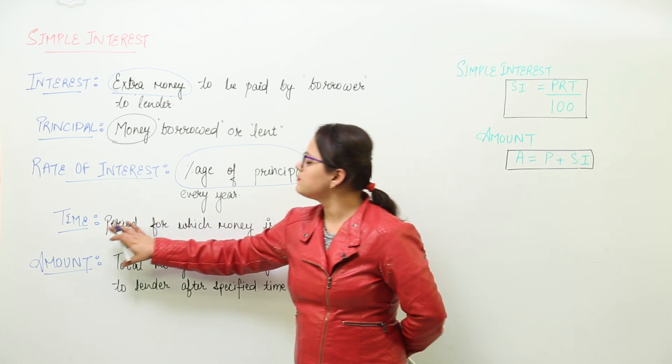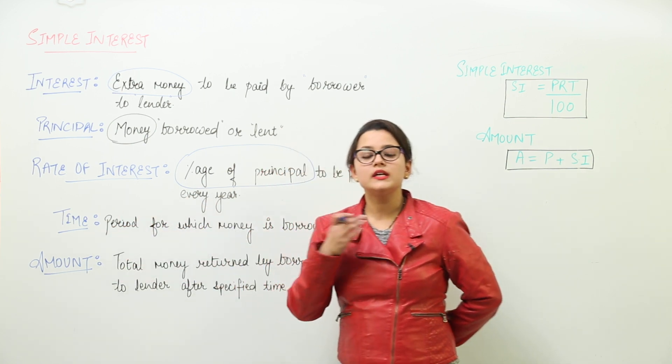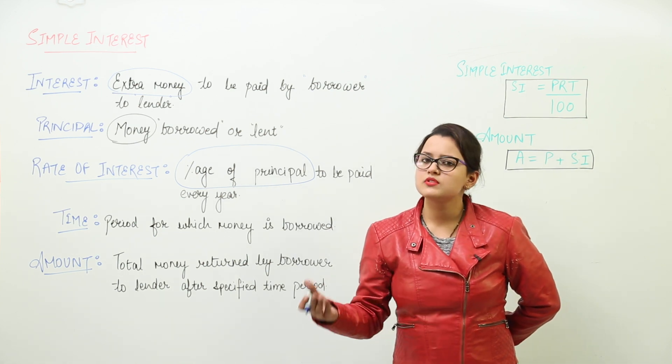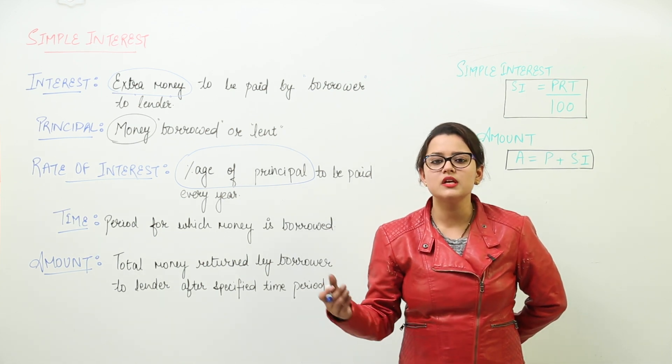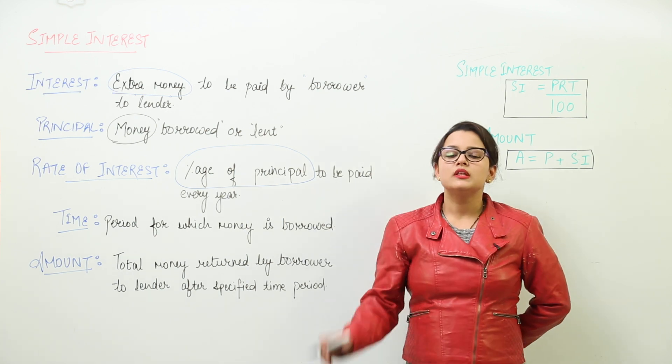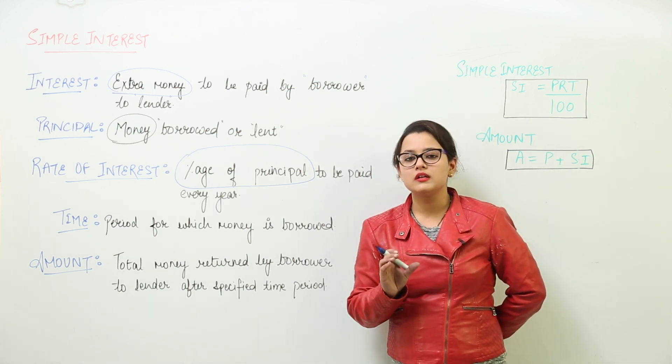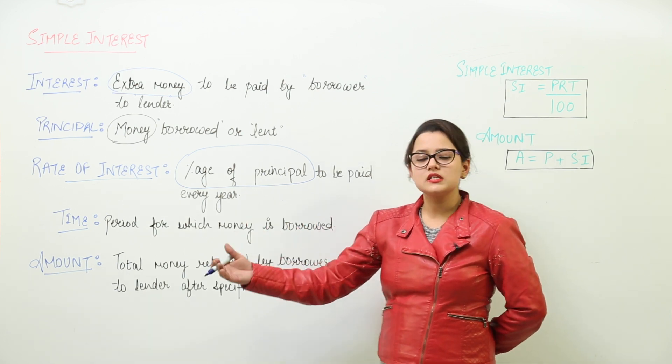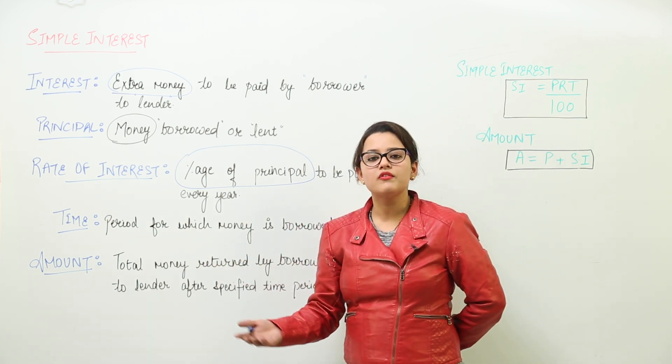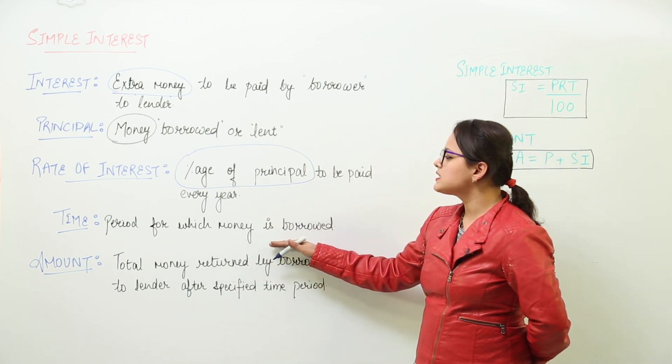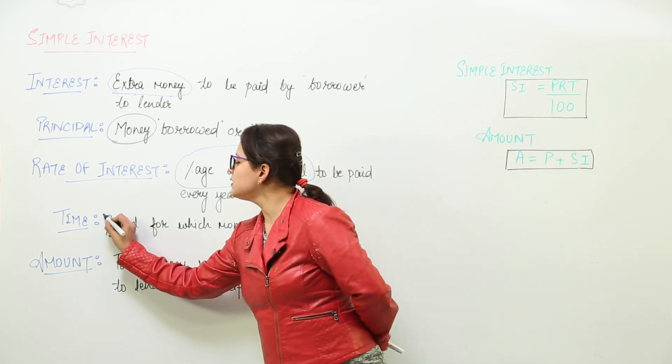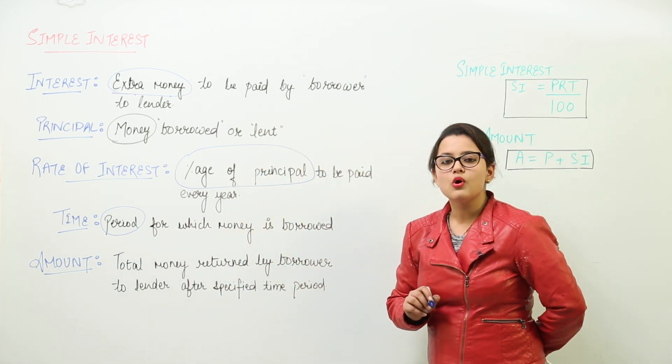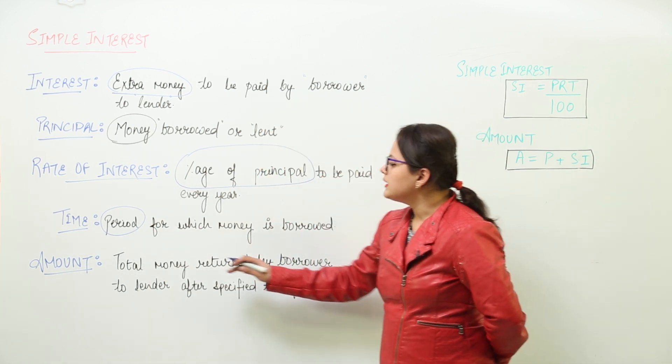The next is the time period. For how long did I borrow the money from my friend? Say for example, I have borrowed it for say some days, some years, it could be some months. So the amount of time I have taken from her that I will be returning it back to her in say 6 months or in 1 and a half year. That represents my time period. So it is the period for which the money will be borrowed or lent.